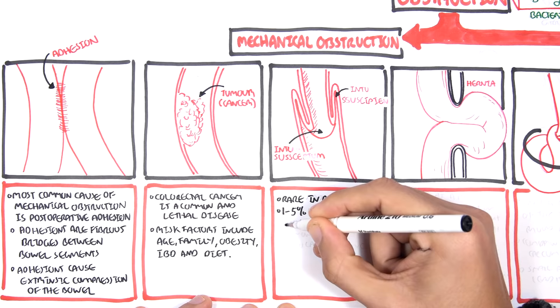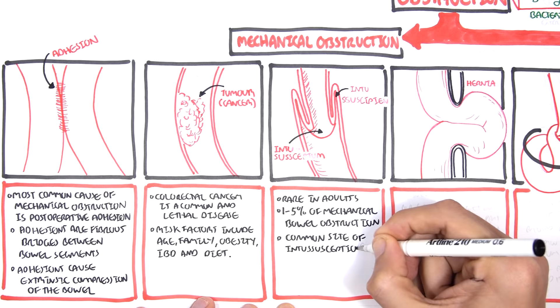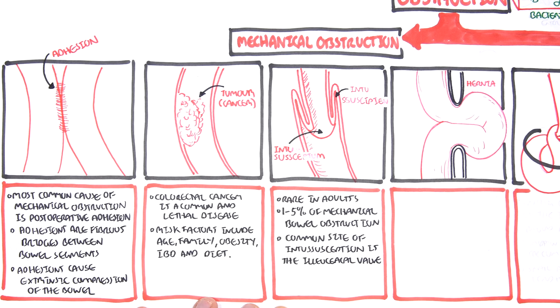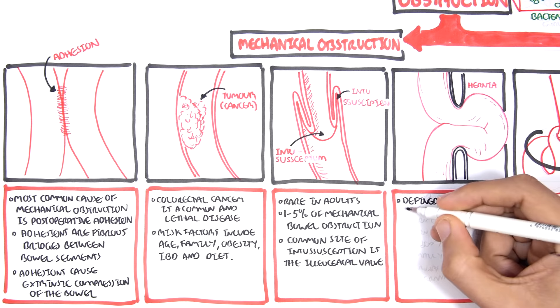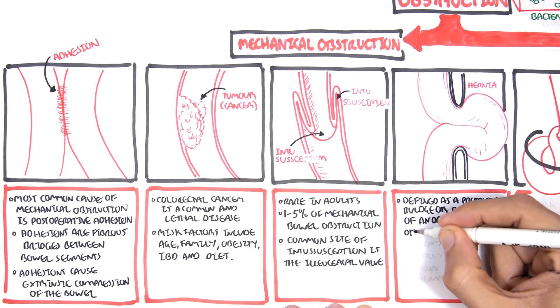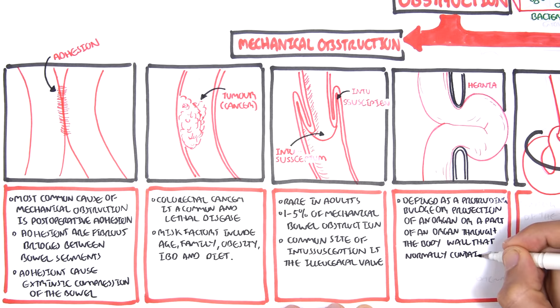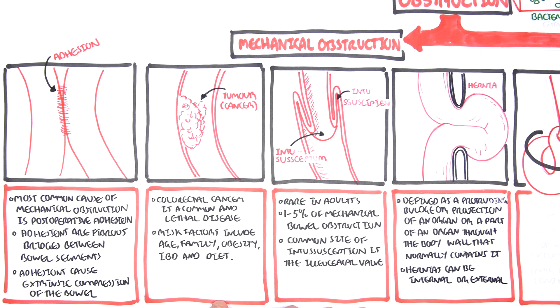Intussusception is rare in adults — about one to five percent of mechanical bowel obstructions result from intussusception. A common site is the ileocecal valve, where the valve invaginates into the cecum. Hernia is defined as a protrusion, bulge, or projection of an organ or part of an organ through the body wall that normally contains it. Hernias can be internal or external; the diagram shows an example of intestine bulging out of the abdominal cavity.